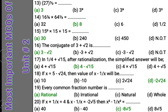Question 19: Every common fraction number — whether improper fraction or proper fraction — all common fractions are rational numbers. As we know, rational numbers are those which can be written in p upon q form, where p and q are integers and q is not equal to zero.